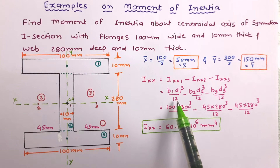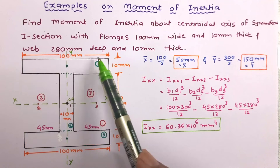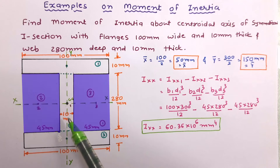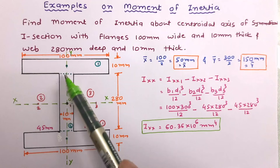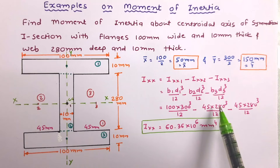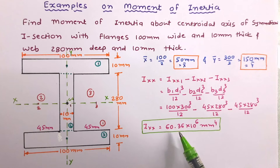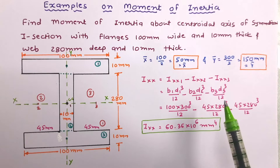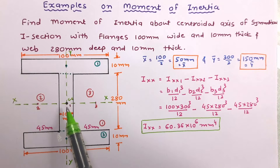The equation is: Ixx = (b₁d₁³/12) − (b₂d₂³/12) − (b₃d₃³/12). For the first figure, b = 100 mm and the total dimension along Y is 300 mm. For the second and third figures, b = 45 mm and d = 280 mm, since 100 − 10 = 90 mm split equally as 45 mm on each side. After calculation, Ixx = 60.36 × 10⁶ mm⁴.